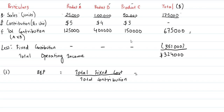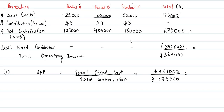We have total fixed cost of $351,000 and total contribution of $675,000. Dividing these gives us $0.52 per unit as the breakeven ratio.